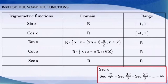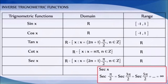The secant function becomes infinity for all odd multiples of pi by 2, therefore its domain is the set of all real numbers except x equal to (2n+1)·π/2, where n belongs to integers, and its range is the set of all real numbers minus the open interval (minus 1, 1).